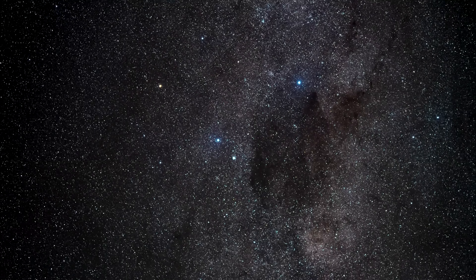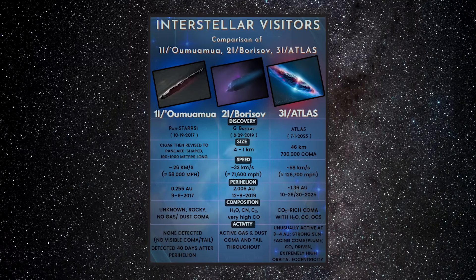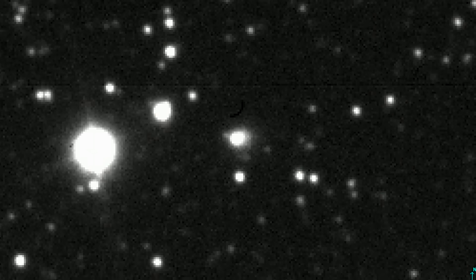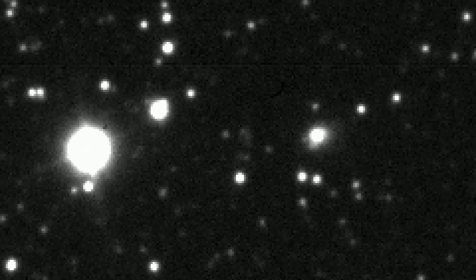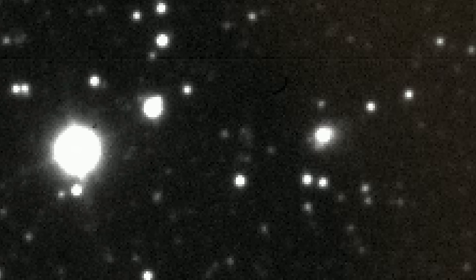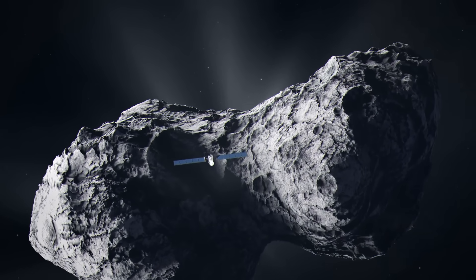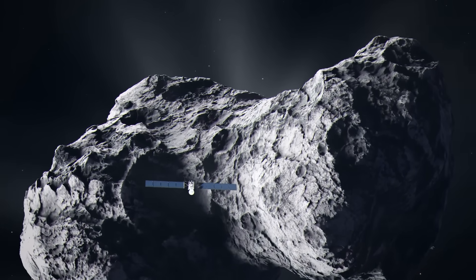Following in the cosmic wake of the mysterious Oumuamua in 2017 and Borisov in 2019, each of these rare bodies had arrived without warning, streaking across the solar system at impossible speeds. To scientists, they were precious—frozen messengers carrying chemical fingerprints from other stars.